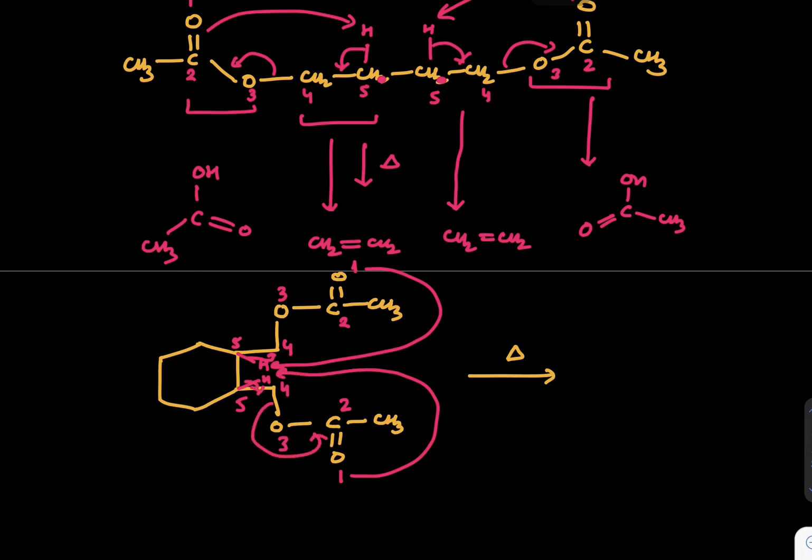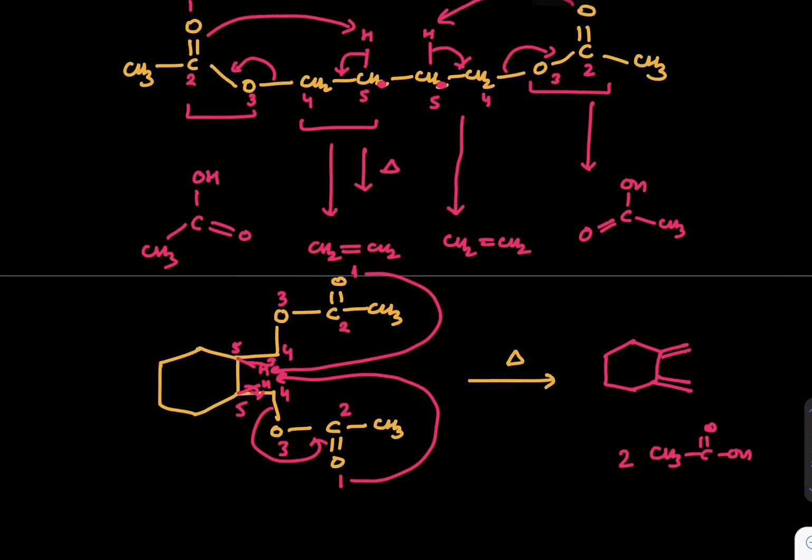What is the result? We should get a result where we have two double bonds like this. This elimination process is happening and we get alkyne kind of structure along with CH3C double bond OH, two units. I hope you understood all the examples of pyrolysis of esters. Keep liking, subscribing, sharing. Thank you very much.